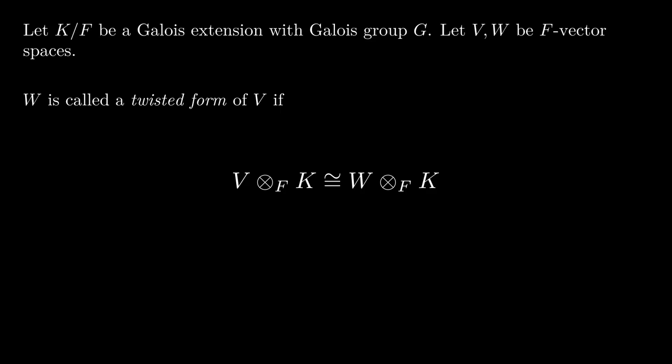Let K over F be a Galois extension with Galois group G. Let V and W be F-vector spaces. There is a canonical construction that takes an F-vector space and lifts it to a K-vector space.